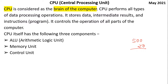CPU stands for Central Processing Unit — the name suggests it is the central part. There are three components of CPU. The computer has four basic components: input, output device, CPU, and storage unit. The CPU consists of three parts: Arithmetic Logic Unit, Memory Unit, and Control Unit.